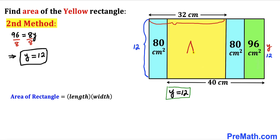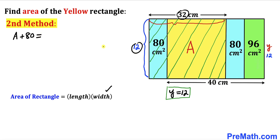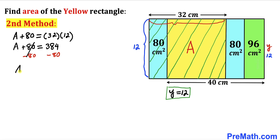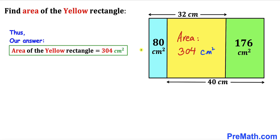Let's assume the area of the yellow rectangle is A. Looking at the shaded part combining yellow and blue, its combined area is A plus 80, and its side lengths are 32 and 12. So: A plus 80 equals 32 times 12. Subtracting 80 from both sides, the area A turns out to be 304 centimeter square. This confirms the area of the yellow rectangle is 304 centimeter square.